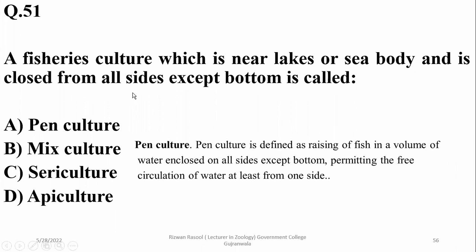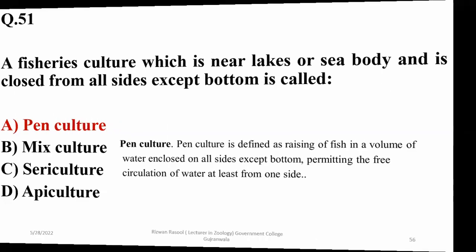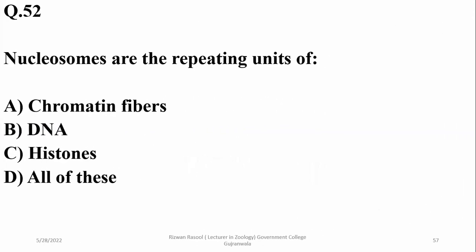Pen culture is defined as the raising of fish in a volume of water enclosed on all sides except the bottom. So the right option is alpha. Number 52: nucleosomes — their components are repeating units and they are obviously found in chromatin fibers, so the right option will be alpha.